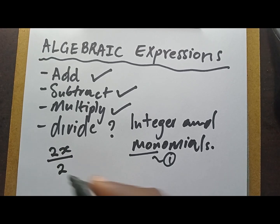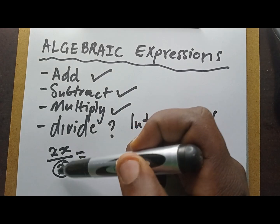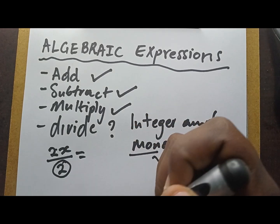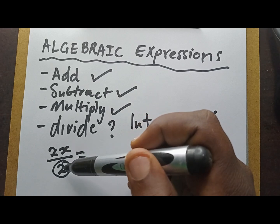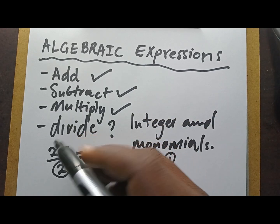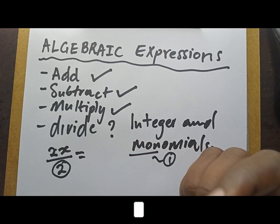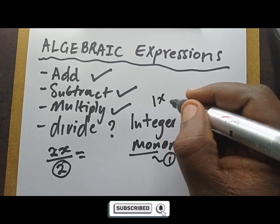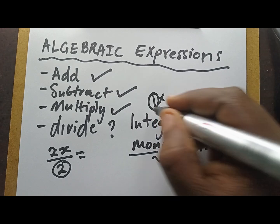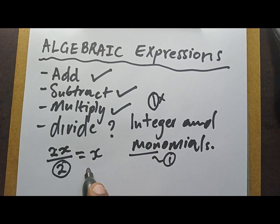Let me do an example. Two x is a monomial, divided by two. Two is an integer. Dividing a monomial — what is the answer? If we get a situation like this where the expression is divided by just an integer without a letter, you focus on the numbers only. Two divided by two is going to be one, and we do not write one x — you just write x alone.